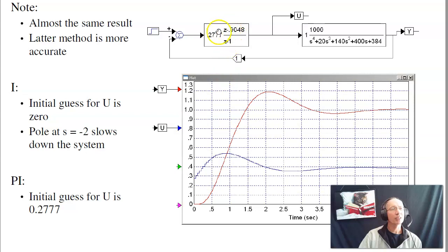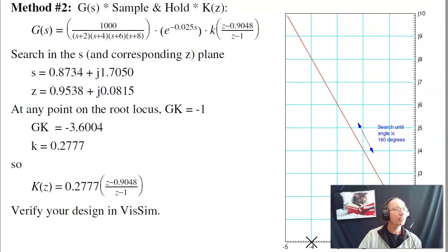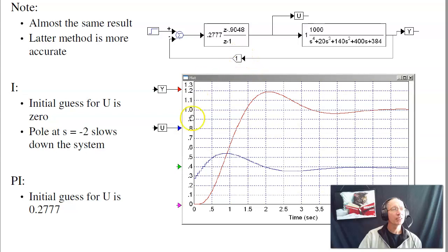They get you there quicker. Or from a root locus standpoint, this gets rid of the problem child. This gets rid of the pole at 0.9048 in the z-plane, gets rid of the pole at, let's see where it was at s-plane, gets rid of the pole at minus two in the s-plane, speeding up the system.